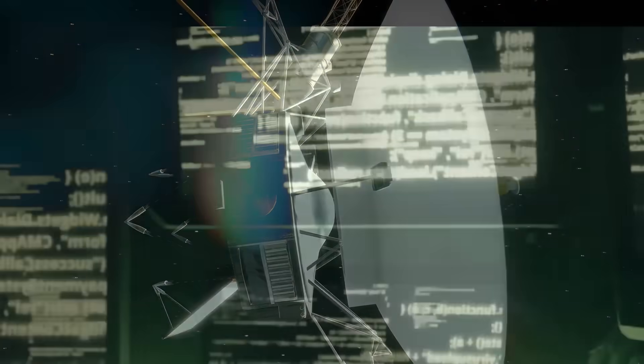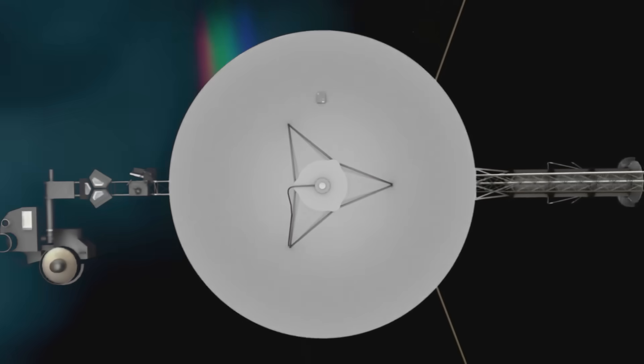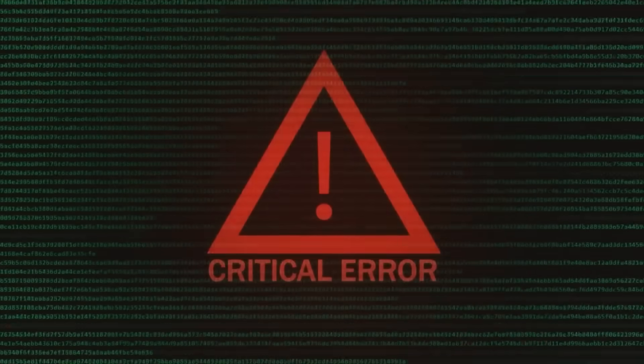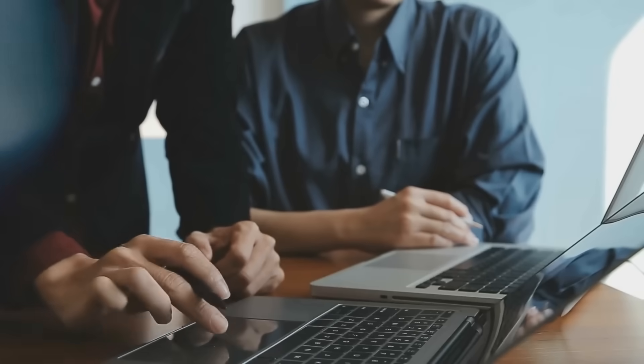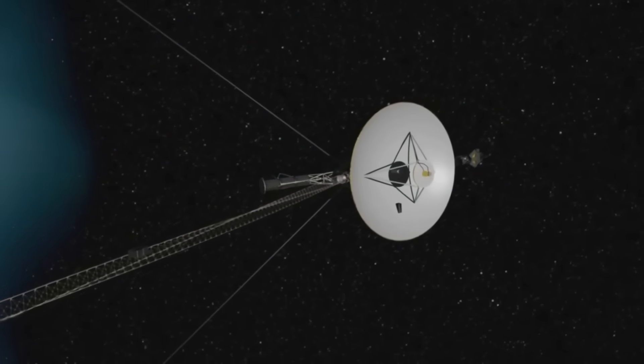Then came the blackout. In 2019, Voyager 2, the most distant working probe in human history, suddenly fell silent. No warning. No error code. Just silence. Engineers at NASA watched, helpless, as the probe went dark, more than 11 billion miles away and unreachable in real time.